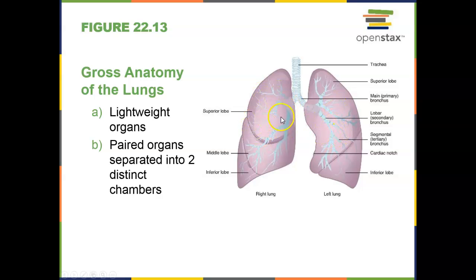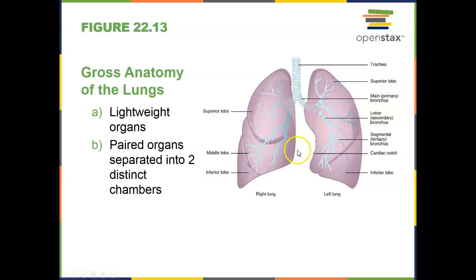The right lung and the left lung differ: the right lung has three lobes while the left lung has two lobes. The left lung is also slightly smaller — it has a cardiac notch where the heart sits, because the heart sits a little closer to the left side than the right side; it's not right in the middle.